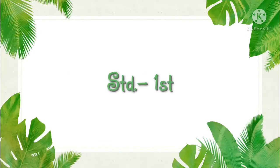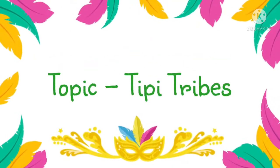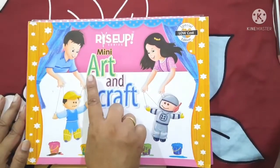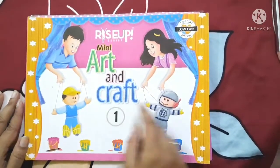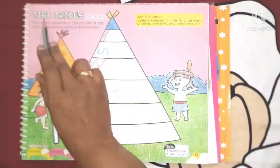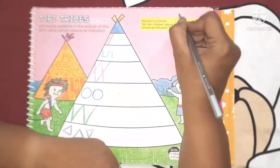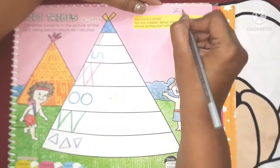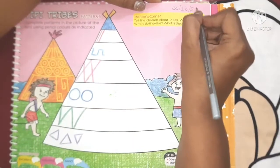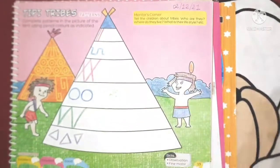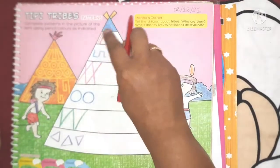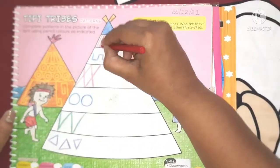Good morning students. Today we are going to see our next craft topic, that is TP Tribes. Now open your art and craft book. This topic is named TP Tribes patterns. Write down today's date, that is 2/12/2021. You can see different patterns here, and we will follow the same patterns.